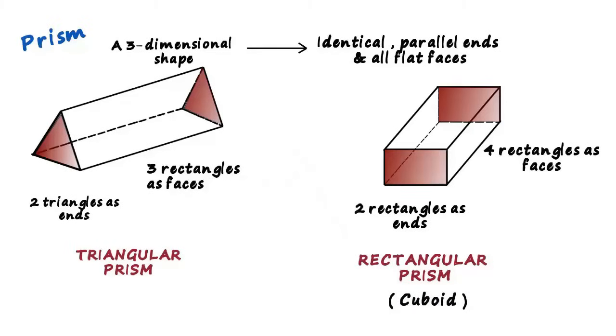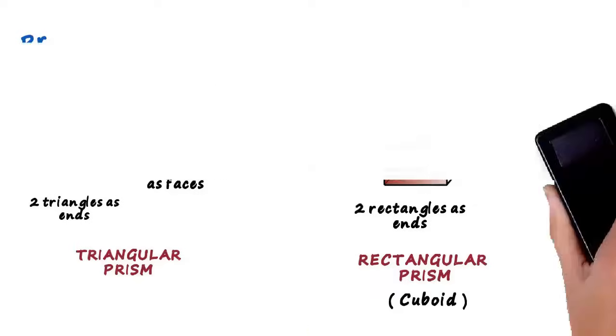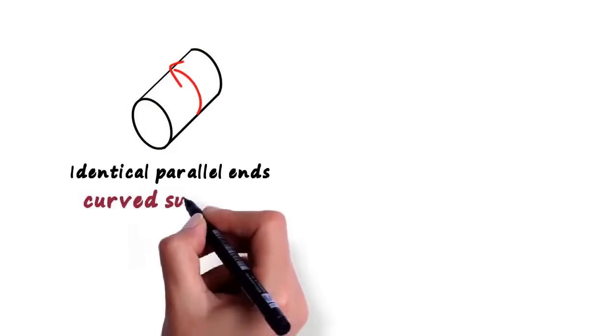Now let's look at a few figures and understand if they are prisms or not. Remember the definition: identical parallel ends and all flat surfaces. Here's the first figure. It's a part of a pipe. Both the ends are circles and are parallel to each other. It means that this figure has identical parallel ends. This figure has identical parallel ends but has a curved surface.